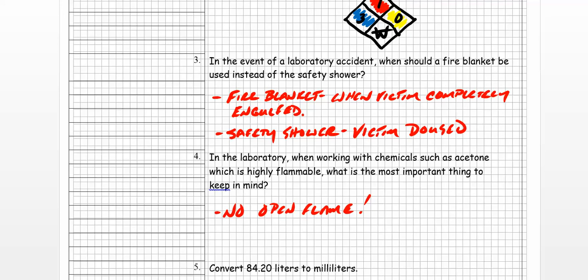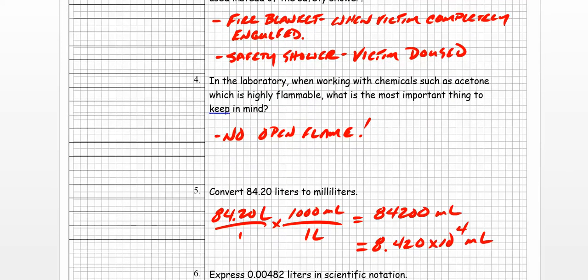So that's number three. Number four, it says, in the laboratory, when working with chemicals such as acetone, which is highly flammable, what is the most important thing to keep in mind? Folks, when you're dealing with flammable materials, like acetone, for example, there should be no open flames in the room. That's critical. No open flames in the room. Just the fumes alone can ignite and cause a disaster. So there are other ways of heating things up in the laboratory without using an open flame. And I'll show you how to do those techniques. You can use hot plates and so forth. But no open flames in the room when you're using highly flammable materials.